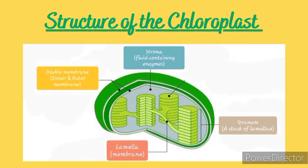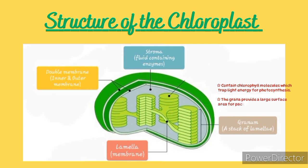Within the chloroplast are membranes called lamellae. A single membrane is a lamella; more than one is lamellae. These membranes can either appear as one, or they can be stacked together — that is, grouped together — to form structures called grana. The grana play a huge role in the functioning of the chloroplasts in two ways. Number one: they contain chlorophyll molecules which trap light energy for the process of photosynthesis. Number two: they provide a large surface area for packaging of chlorophyll molecules. This means that if you have more chlorophyll molecules, more light will be trapped and the process of photosynthesis will be much faster.